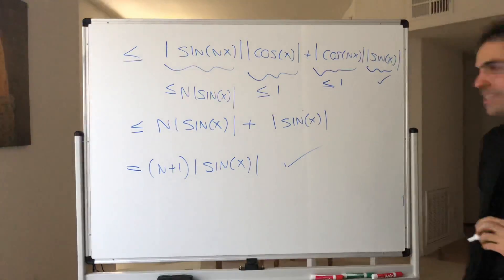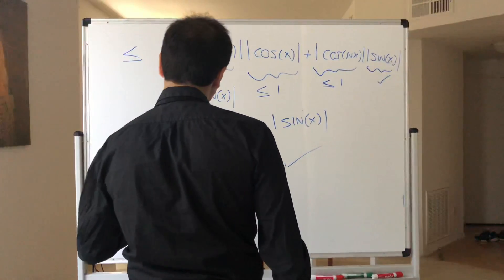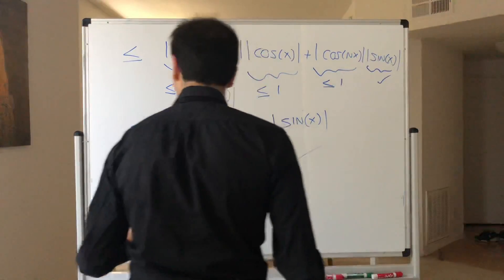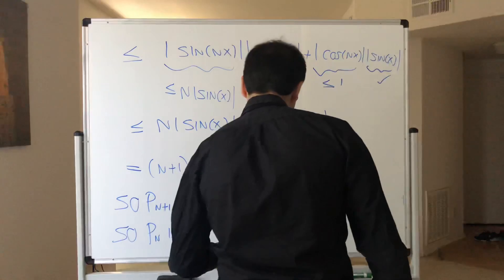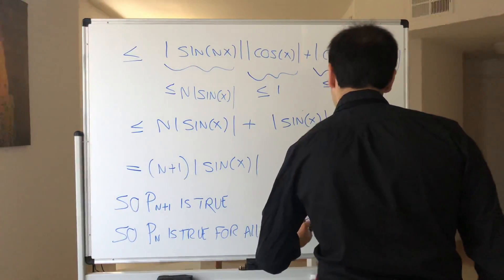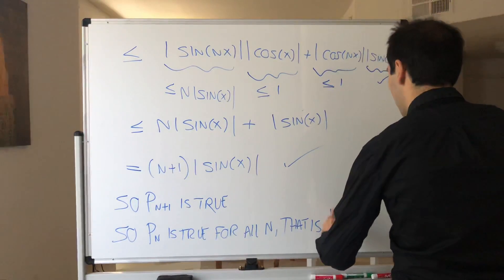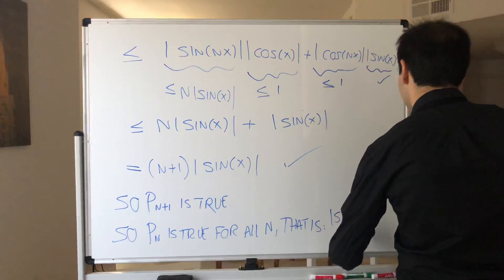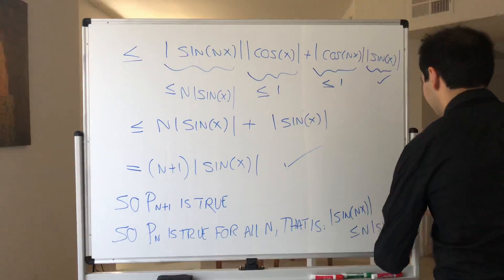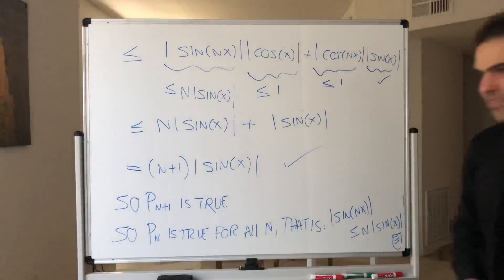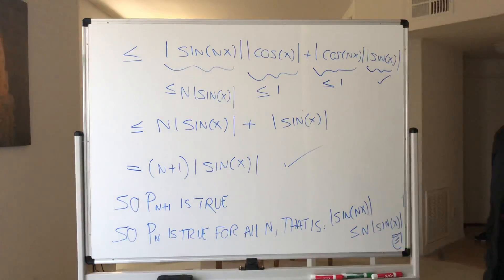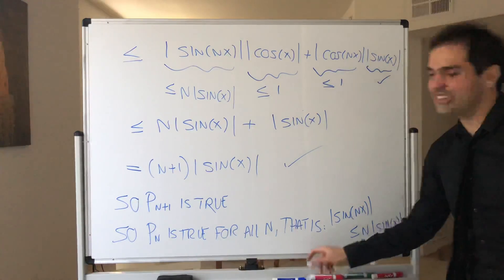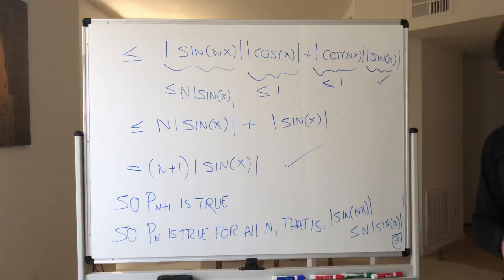And therefore, we've shown that P(n+1) is true. So P(n) is true for all n — that is, absolute value of sine of nx is less than or equal to n times absolute value of sine of x. QED. Also quite an interesting problem — try it out for cosine, see if it works or not. If you're my student, you have to try it. All right, I hope you liked this. If you want to see more math, please make sure to subscribe to my channel. Thank you very much.